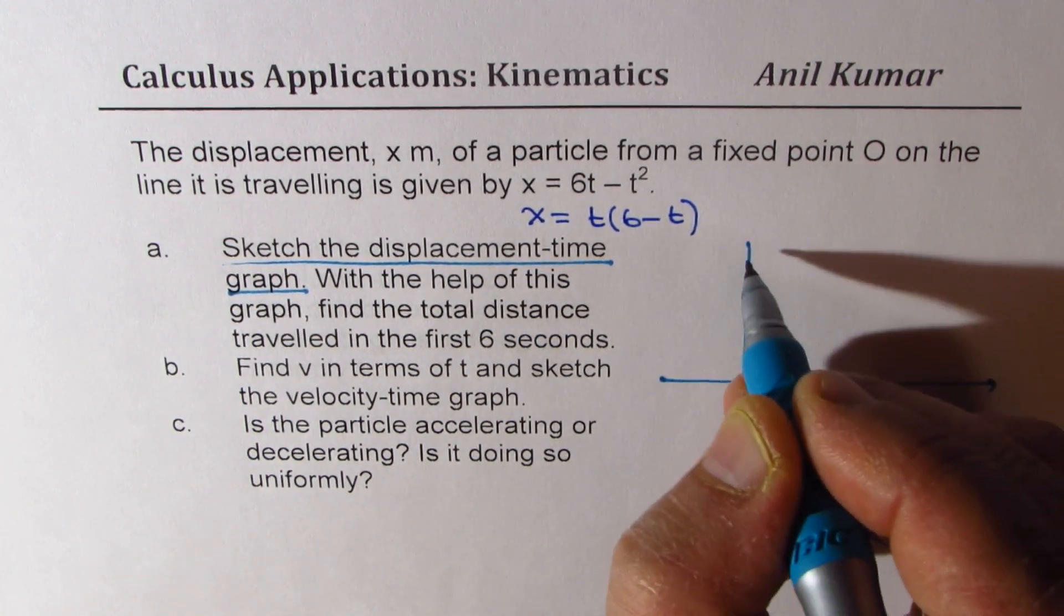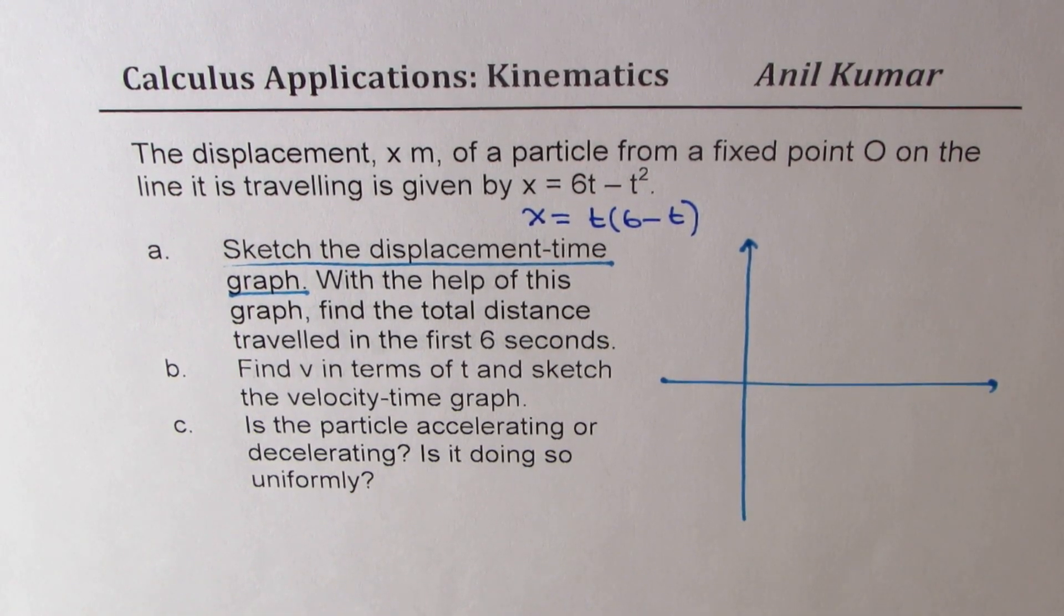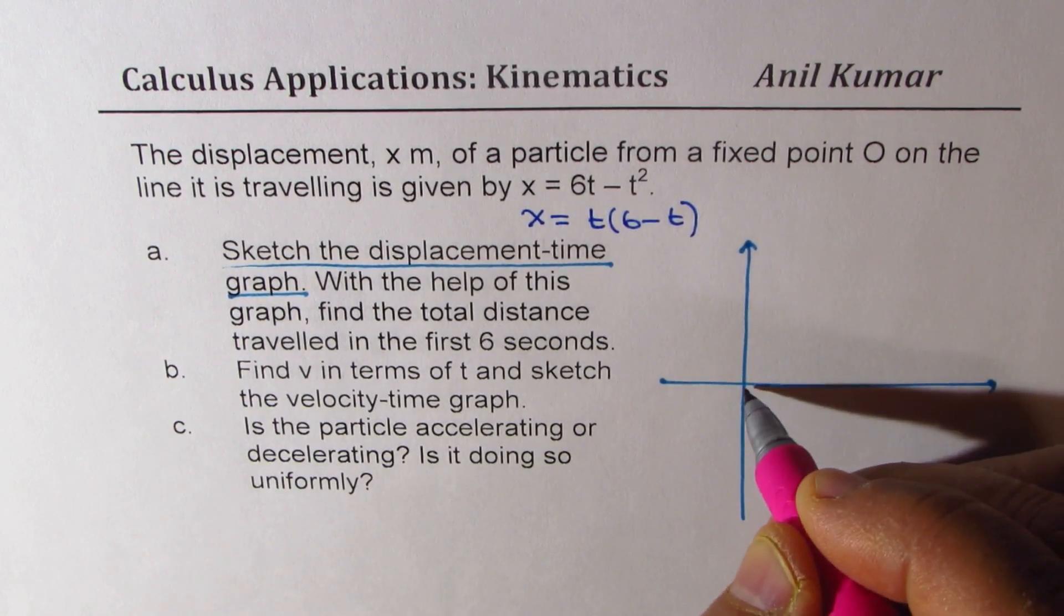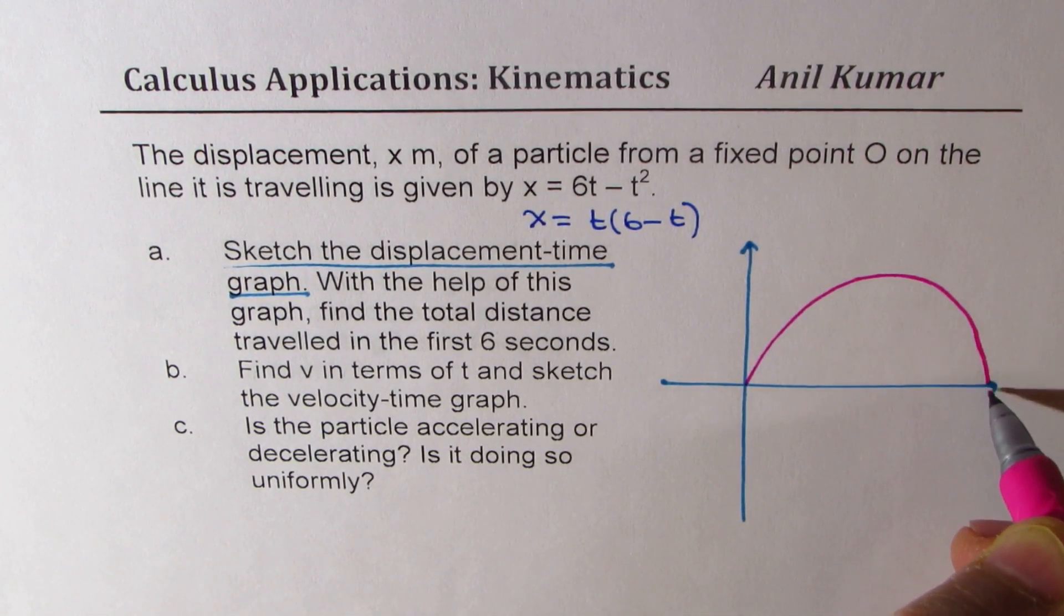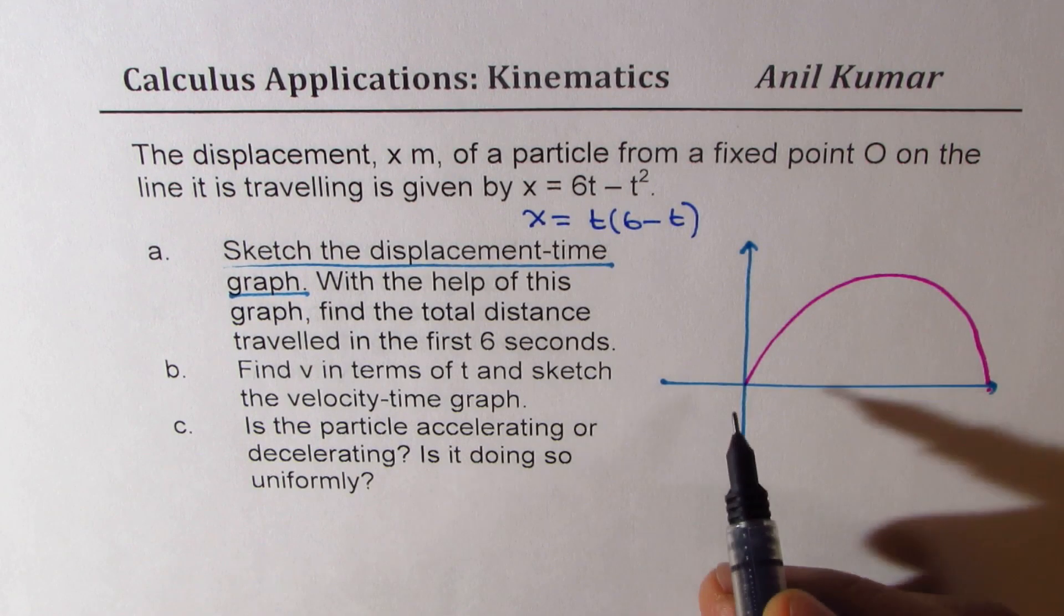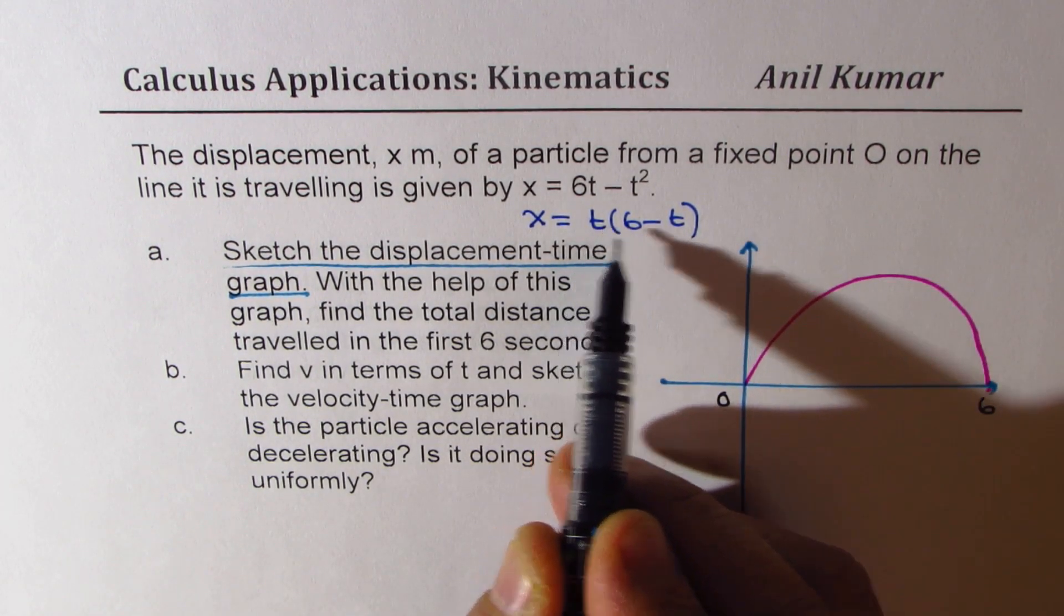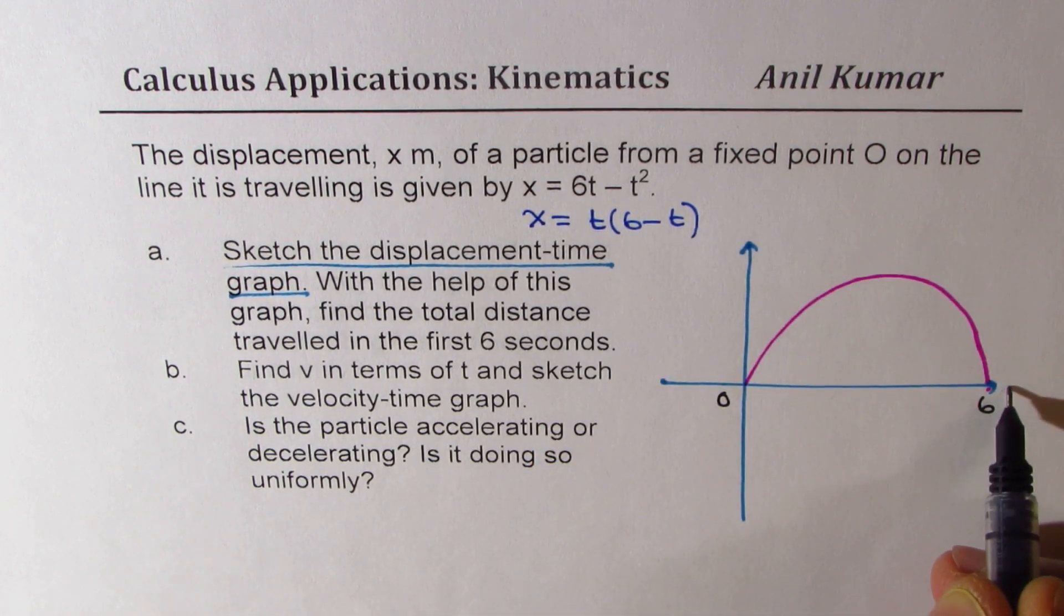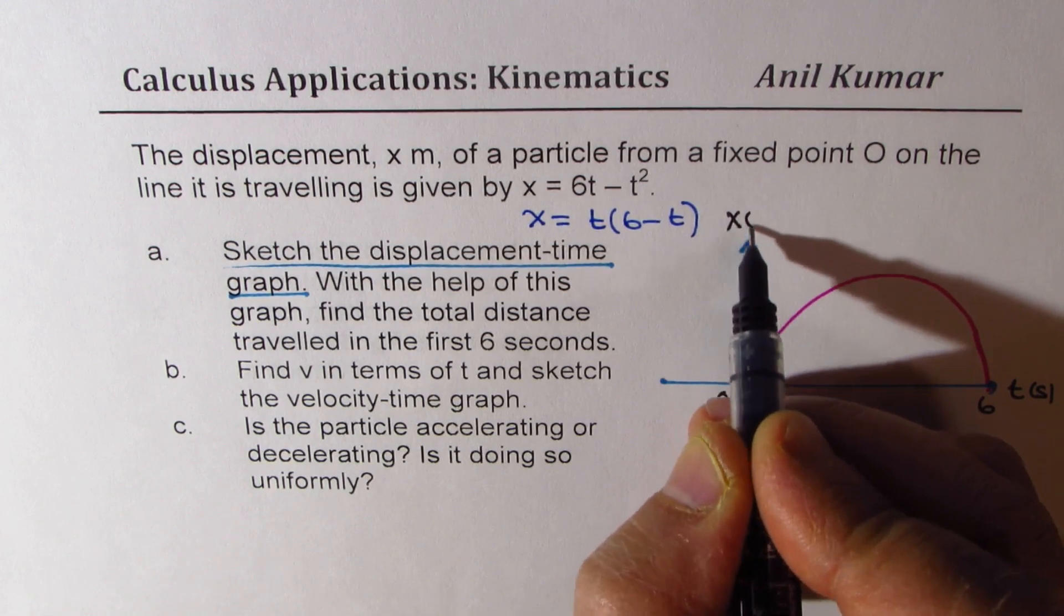Let's sketch it here. It is a parabola which opens downwards. We'll figure out the values later. So the zeros are at 0 and at 6, right? So this equation will be 0 at 0 or at 6. So we have time t in seconds and here we have x in meters.